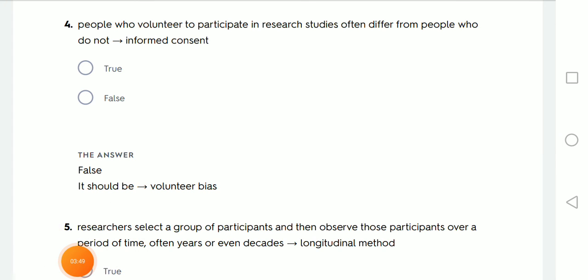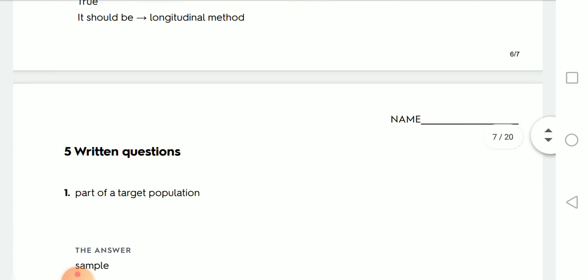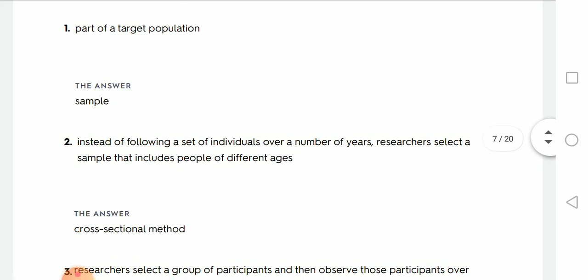People who volunteer to participate in research studies differ from people who do not. This is called what? This is not an informed concept, no. This is the volunteer bias. Researchers select a group of participants and then observe those participants over a period of time, longitudinal. Part of target population, this is the sample. We said.